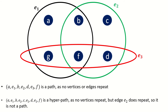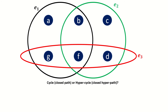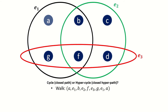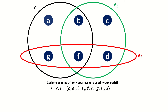Note that like walks, hyperpaths and paths can be either closed or open, depending on whether the last vertex is the same as the first vertex. We have a special term for closed paths and closed hyperpaths: a closed hyperpath is a hypercycle, and a closed path is a cycle. As an exercise, consider a closed walk — it's a hypercycle because while no vertices are repeated, there is a repeated edge e_1, meaning it can't be a cycle.